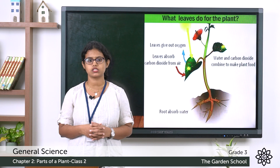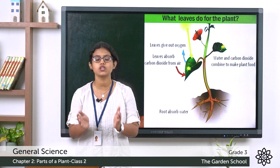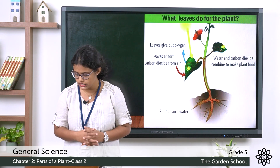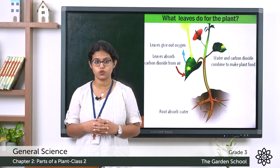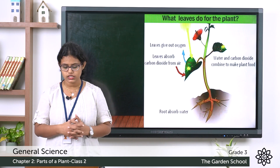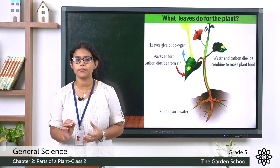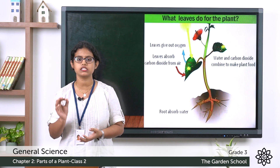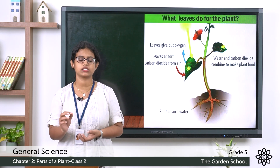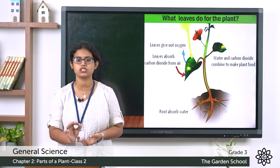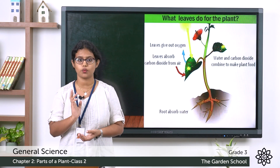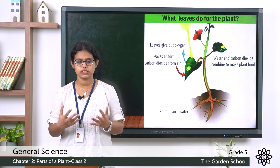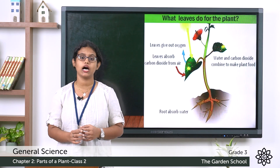Now let's take page number 17 in your textbook. There is a small exercise. The first question: air enters a plant through — roots or stomata? The correct answer is stomata, because stomata are tiny pores present on the surface of the leaf. The second question: leaf veins are found only on the top of the leaf — true or false? The answer is no, that is false.